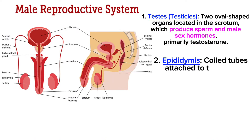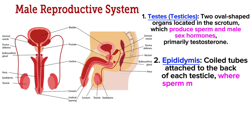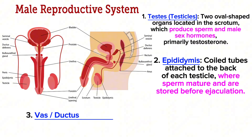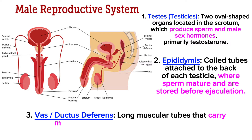Next is the epididymis — coiled tubes attached to the back of each testicle where sperm mature and are stored before ejaculation.